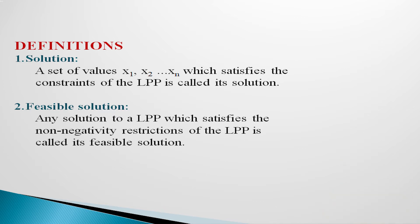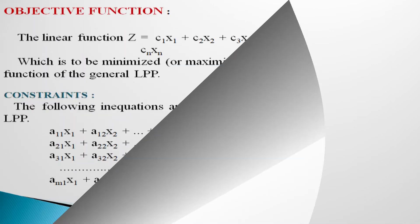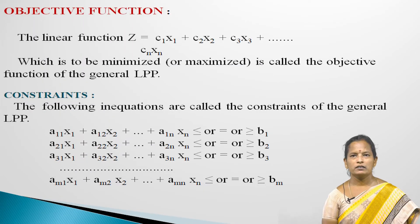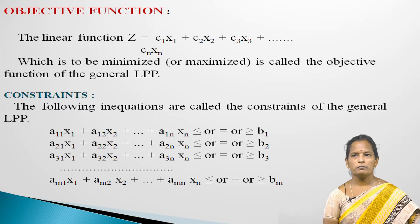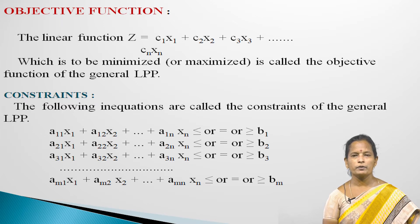Feasible Solution: Any solution to an LPP which satisfies the non-negativity restrictions of the LPP is called its feasible solution. Objective Function: The linear function Z equal to c1x1 plus c2x2 plus c3x3 ... plus cnxn which is to be minimized or maximized is called the objective function of the general LPP.